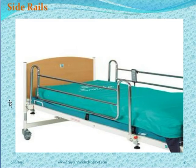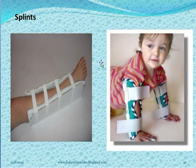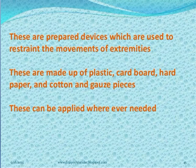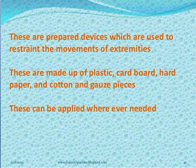Next is side rails. Next is splints — these are special types of supports used to immobilize a part of the body. Next is positioners — these are prepared devices used to restrain the movement of extremities, made up of plastic, cardboard, paper, cotton, and watch-piece material, and applied over the needed area.